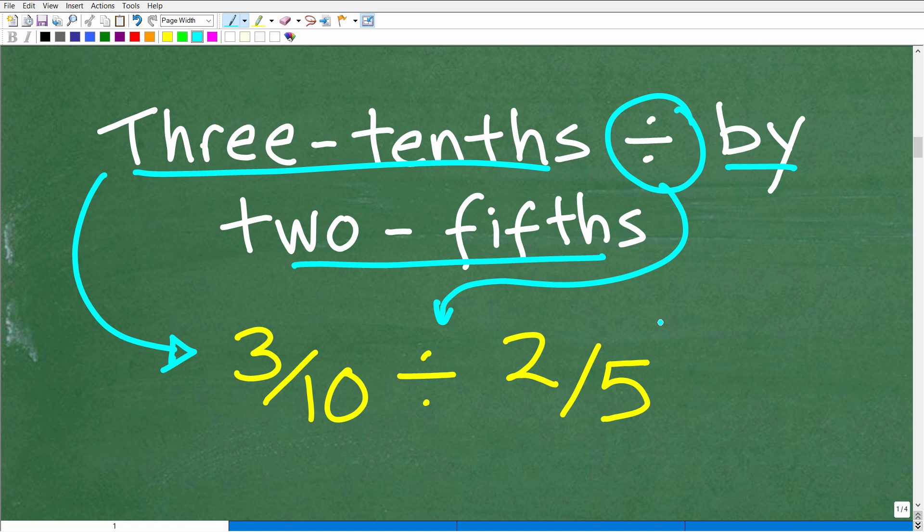So really what we're doing here is translating a verbal math problem into an actual math problem with numbers. So we had some choices whether we're going to work with decimals and fractions. I'm going to suggest that you work all with fractions. So this is the problem that we're going to do. 3/10 divided by 2/5. How do you do this problem?